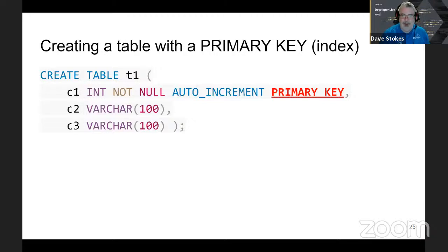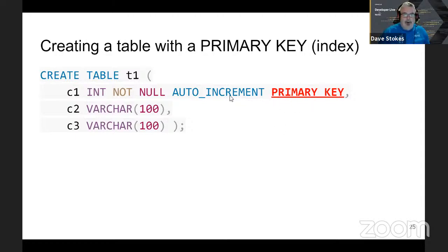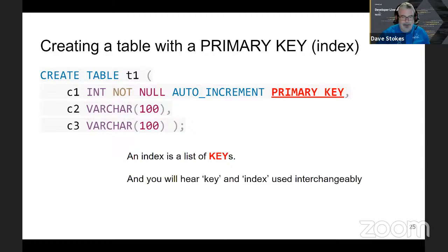Let's create a simple table with a primary key. MySQL's main storage engine InnoDB prefers to have a primary key — if you don't specify one, it will make up a dummy one that will not be performant. Pick your own primary key. We have a simple table called t1 with three columns: the first is an integer, not null, auto-increment — every time we insert a row it increments by one — and we call this our primary key. An index is a list of keys; you'll often hear 'index' and 'key' used interchangeably in the MySQL world.